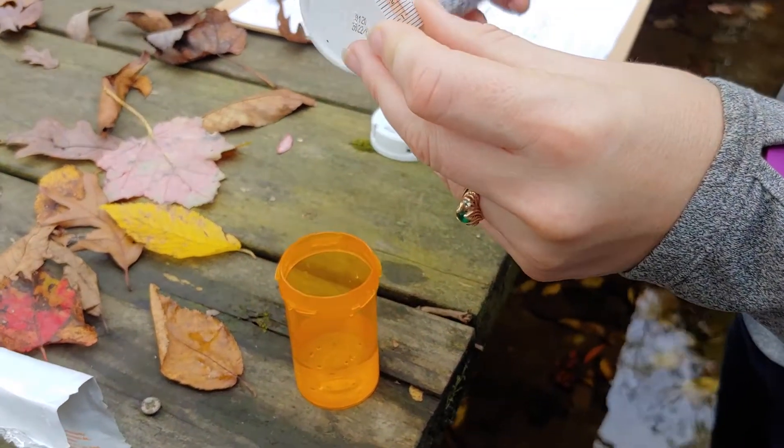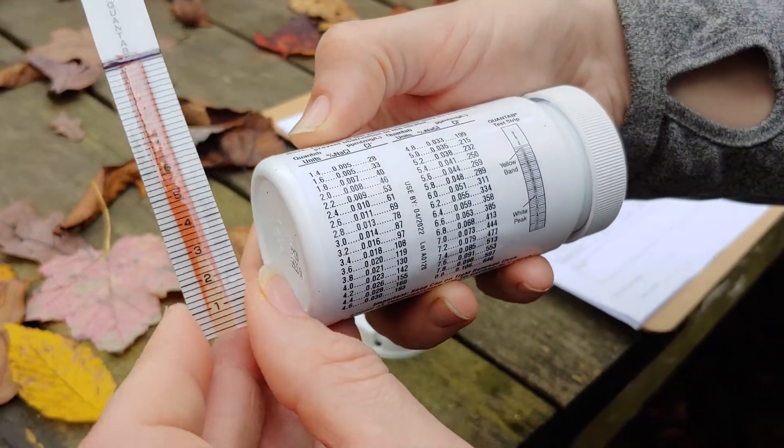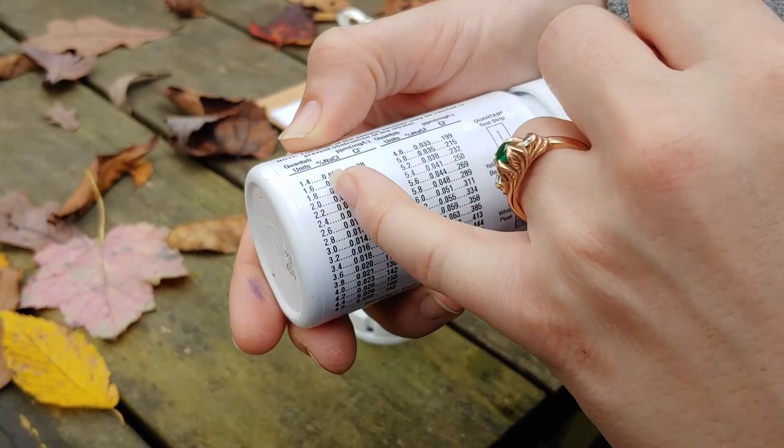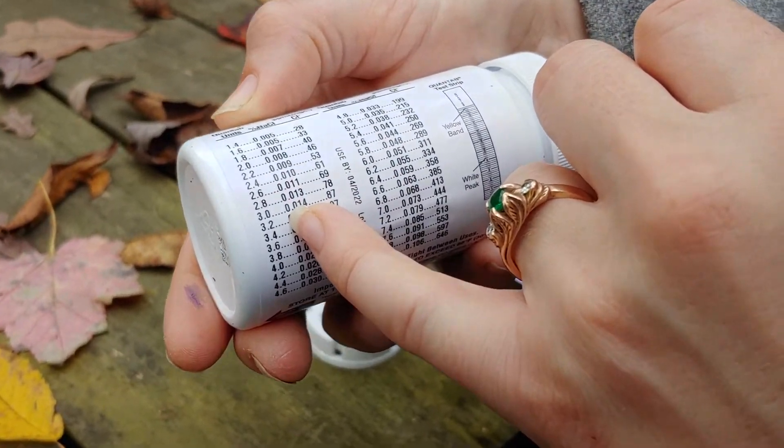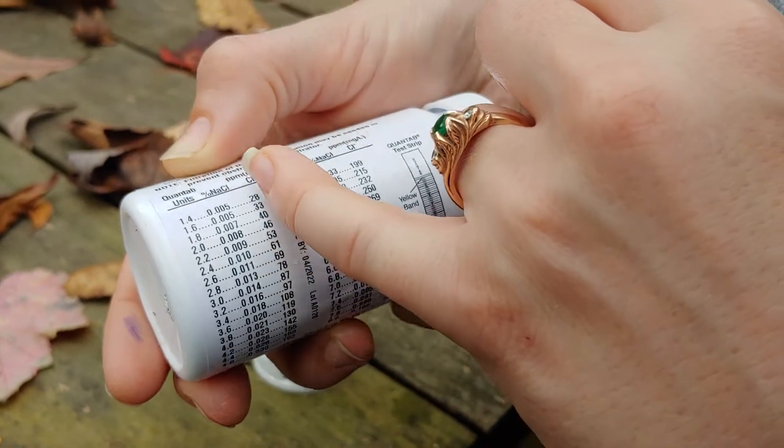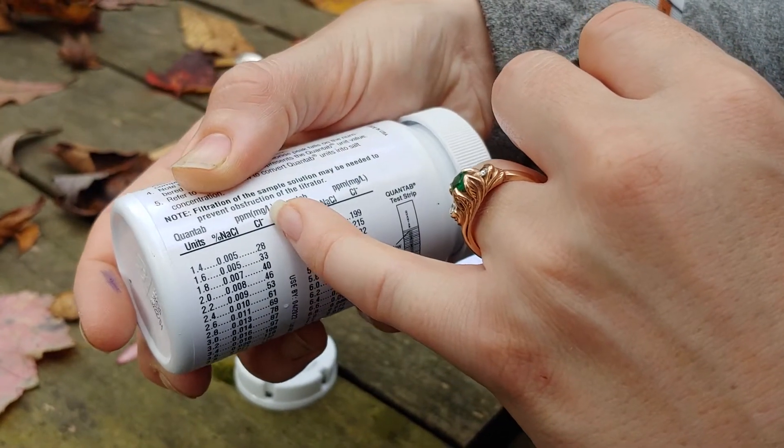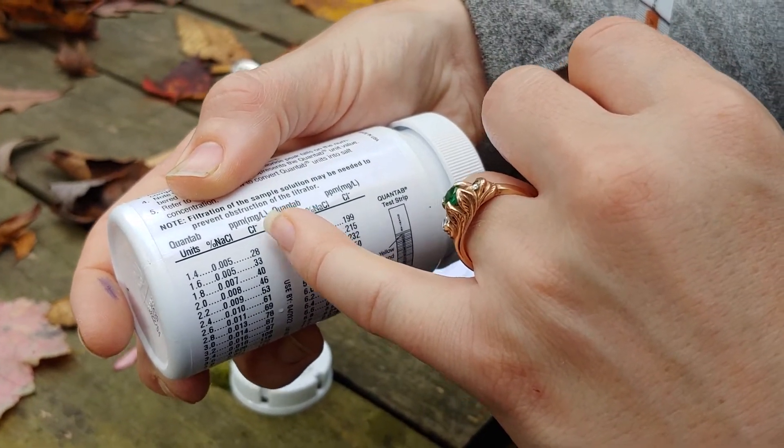So what that means is we're going to come over here to our bottle or sheet that has the conversions on it. So we are at 3.2 Quantab units, which means there's 0.016% sodium chloride and 97 parts per million of our chloride ions.